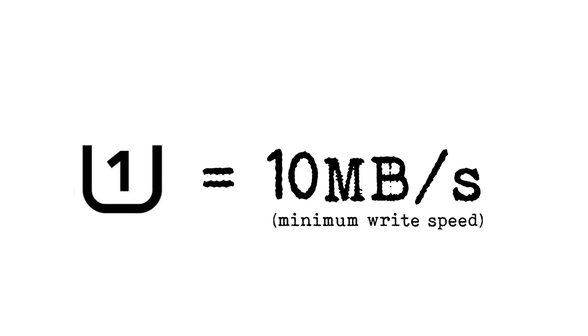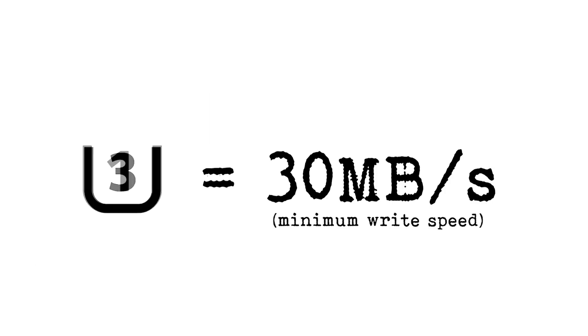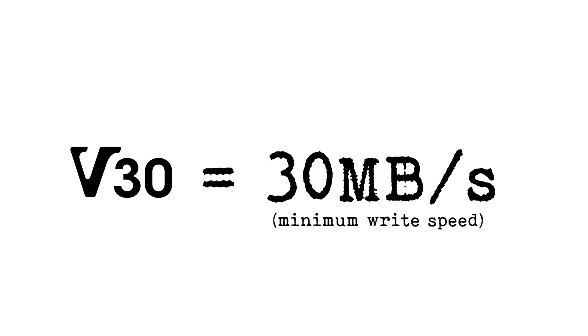The U speed is a letter U with a number within it. These numbers need to be multiplied by 10 to get the megabytes per second write speed, so U1 is 10 megabytes per second and U3 is 30 megabytes per second. The V system is the letter V with a number next to it, where the number is the actual megabytes per second rate. So V30 is 30 megabytes per second minimum write speed, and V90 is 90 megabytes per second minimum write speed.